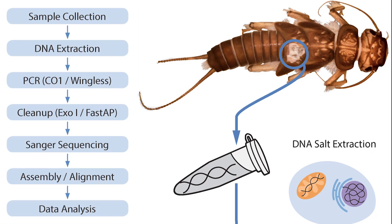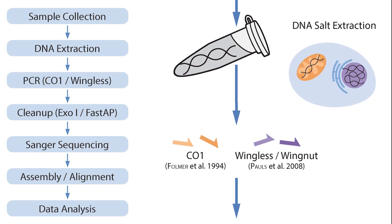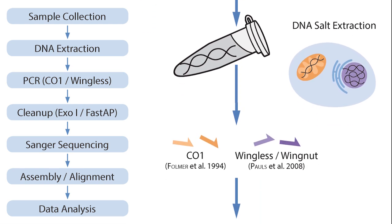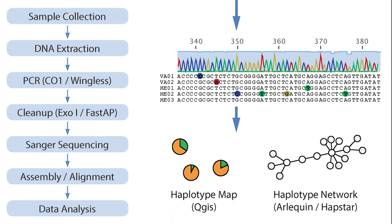After sample collection and identification, we used the standard CTAB protocol to extract the DNA. We looked at two molecular markers: the mitochondrial barcoding gene CO1 and the nuclear wingless gene. The sequences were processed in the computer and checked with different statistical methods.